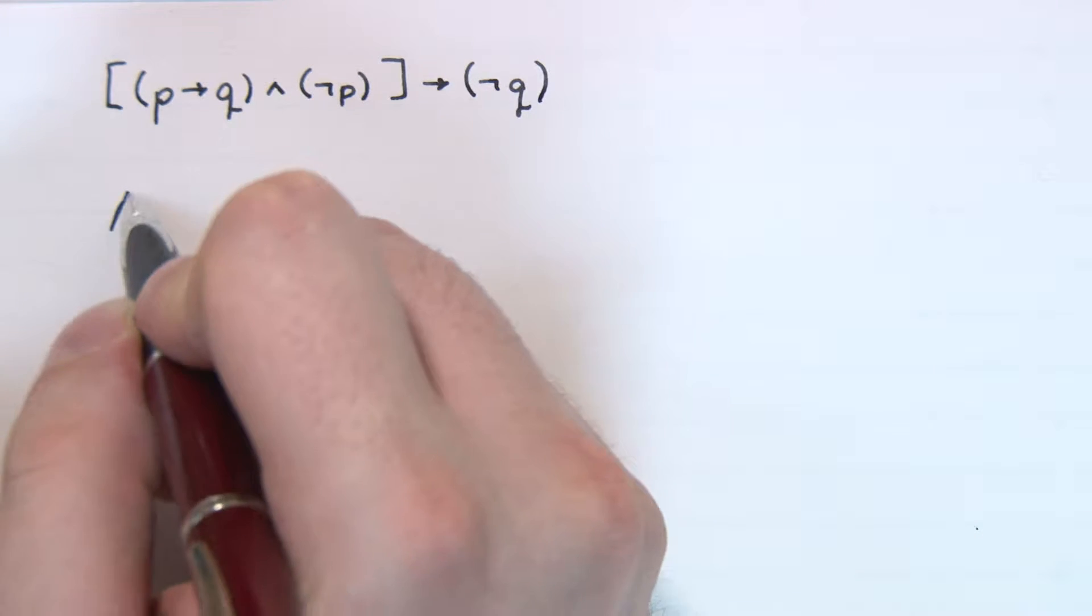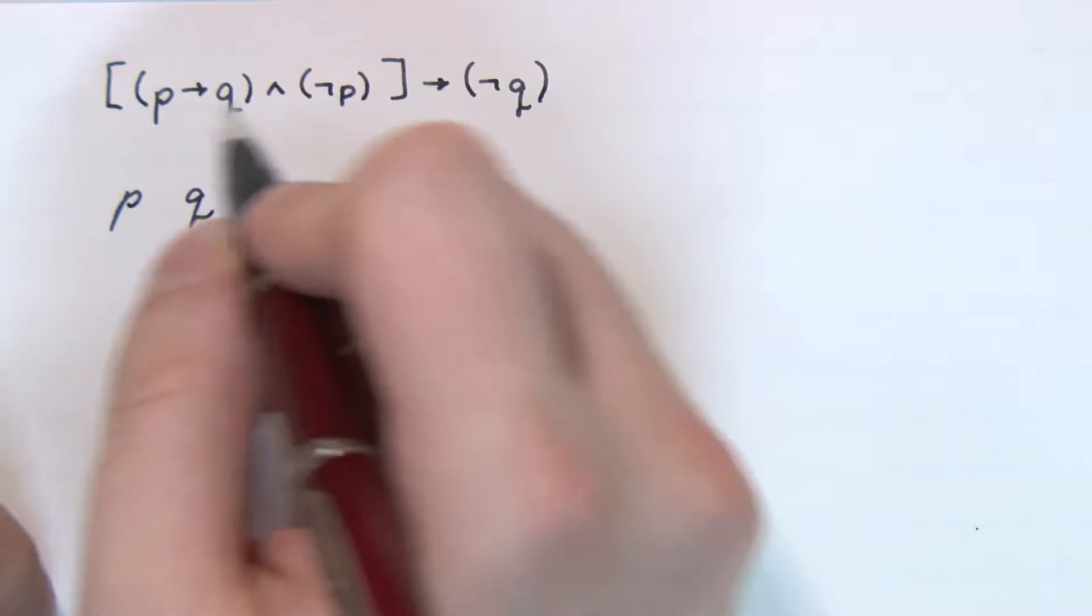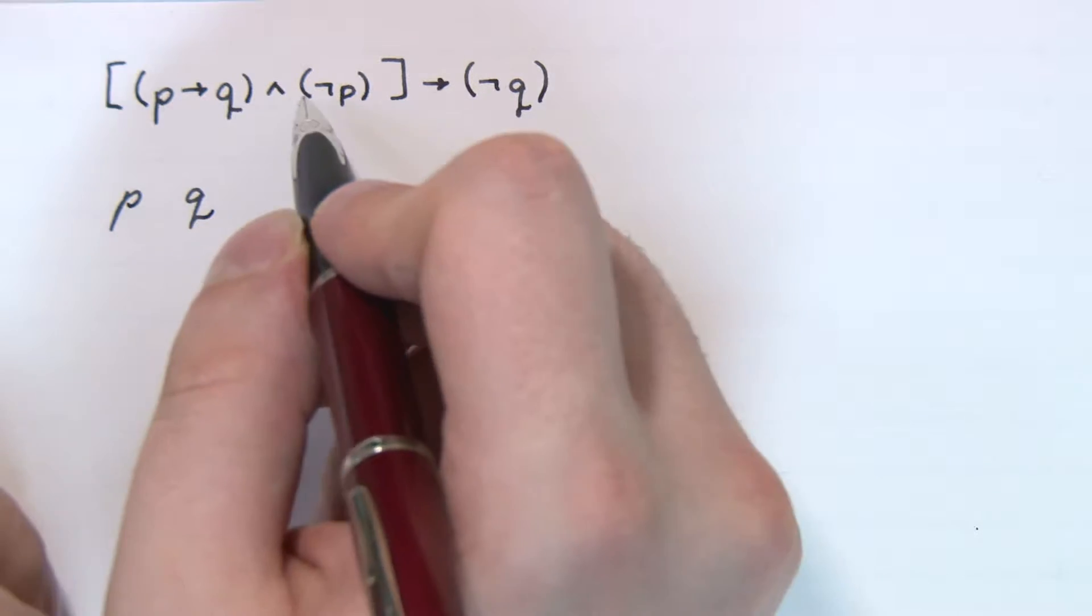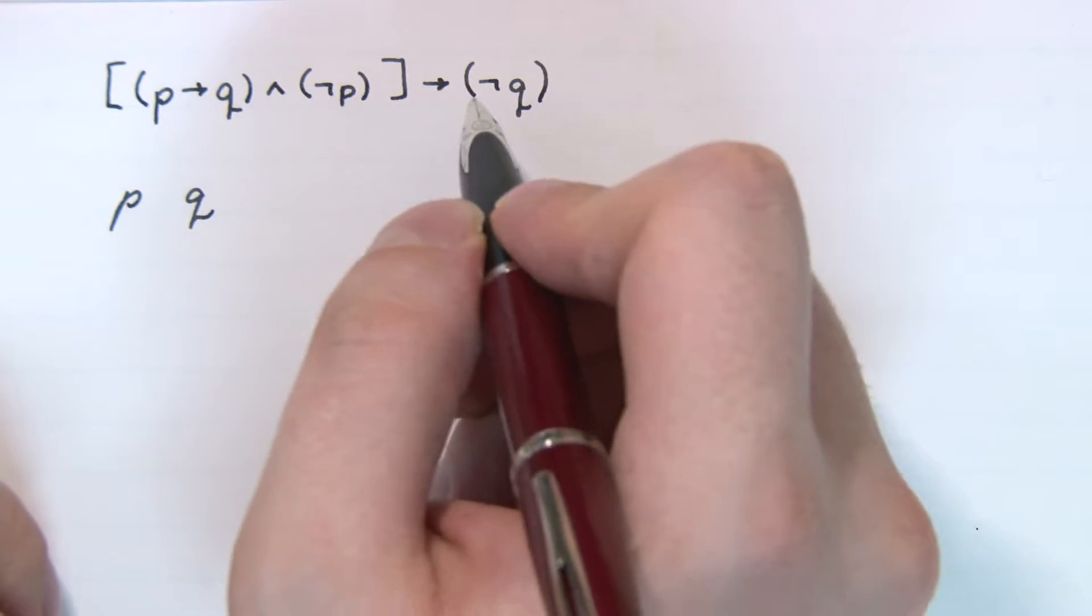We're going to generate the truth table for this statement, which is P implies Q and not P, all implies not Q.